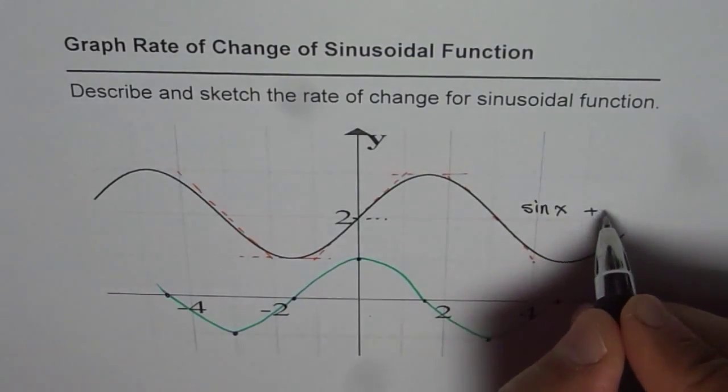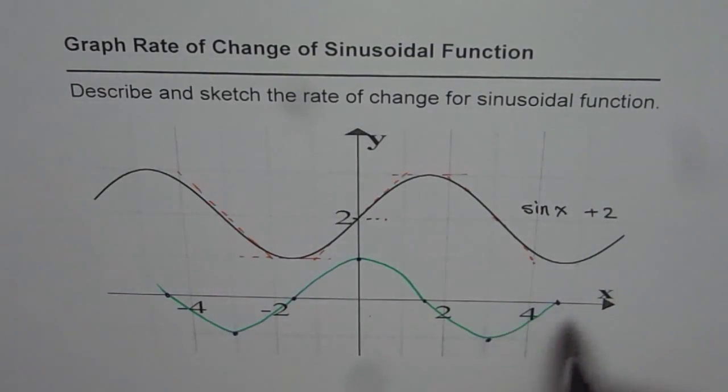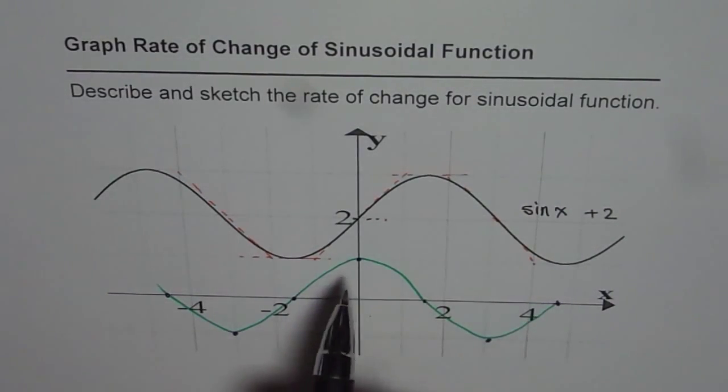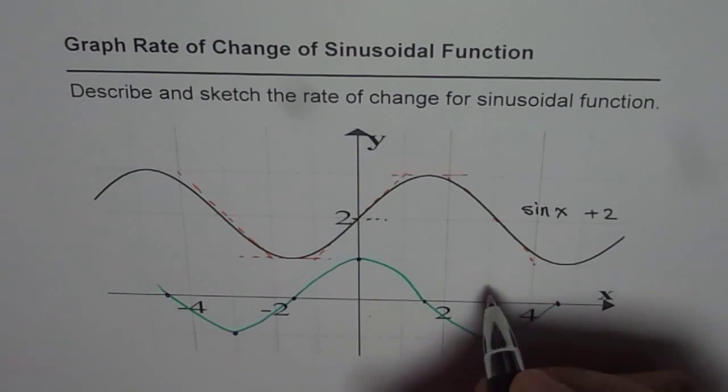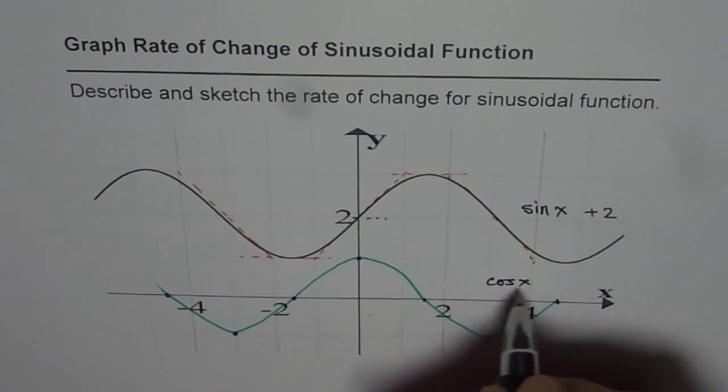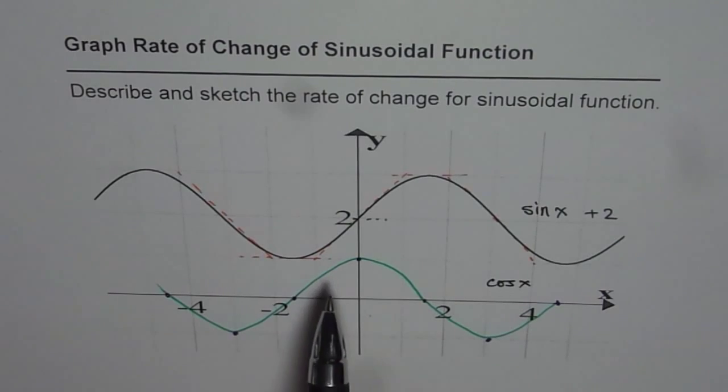Let me write this as sine x plus 2. The rate of change will be a cosine function. It is like cos x. The rate of change for a sinusoidal function is a cosine function. That is what you get. I hope that is absolutely clear. Thank you and all the best.